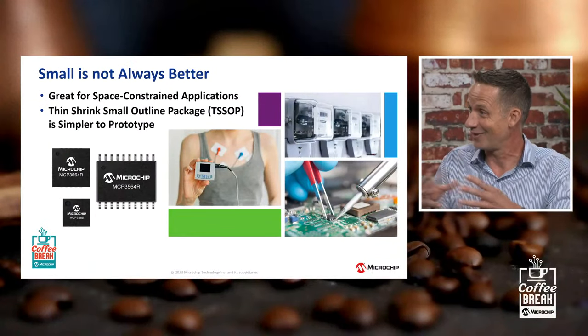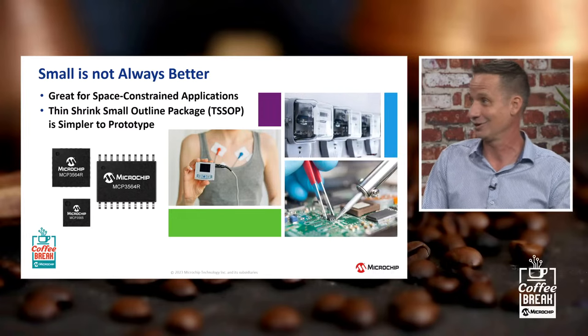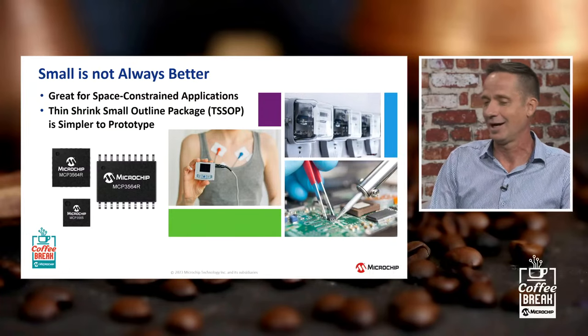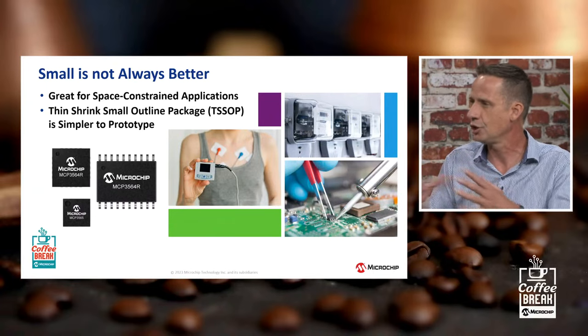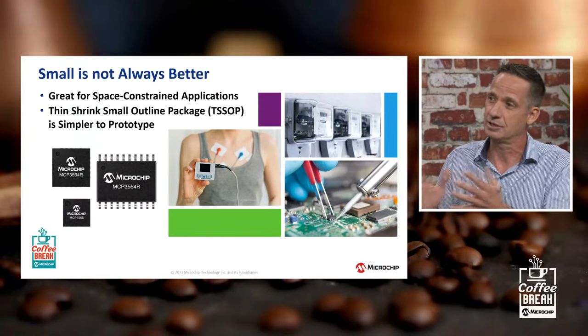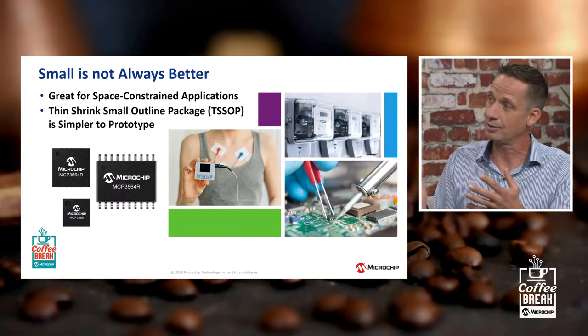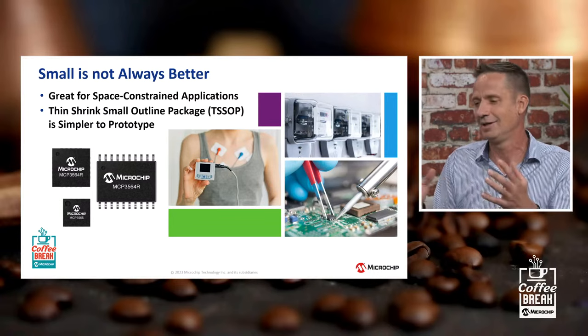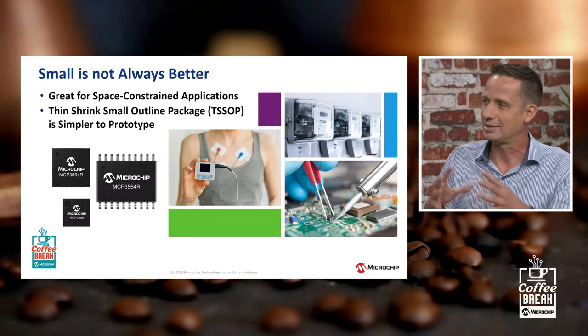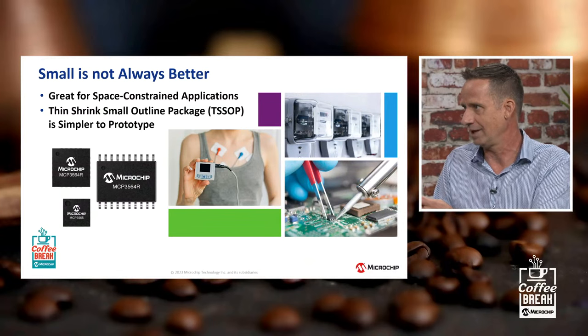When developing with something like this, what considerations do people need to think about when prototyping or designing the system? Small is not always better with these devices. We have really small packages on our Delta Sigma ADCs — in one package we have a 3mm by 3mm QFN package, which is the smallest multi-channel device out there. We also have a single differential channel device in a 2mm by 2mm package — these can fit into really tight spaces and mobile devices.